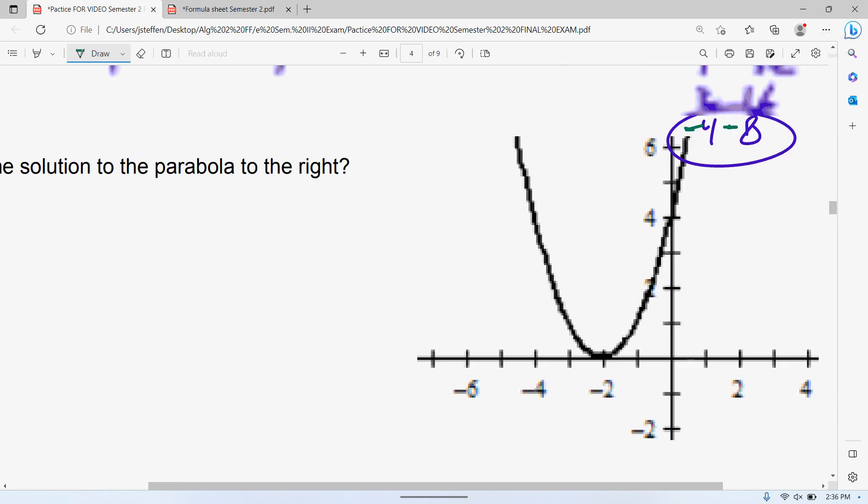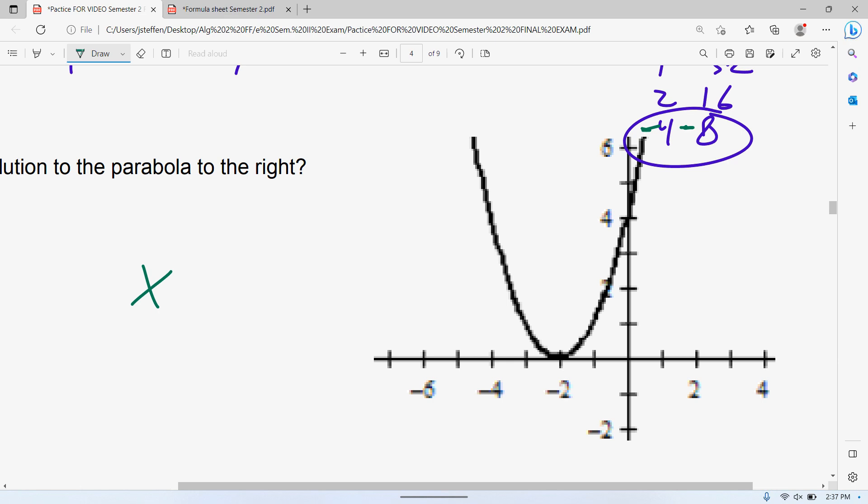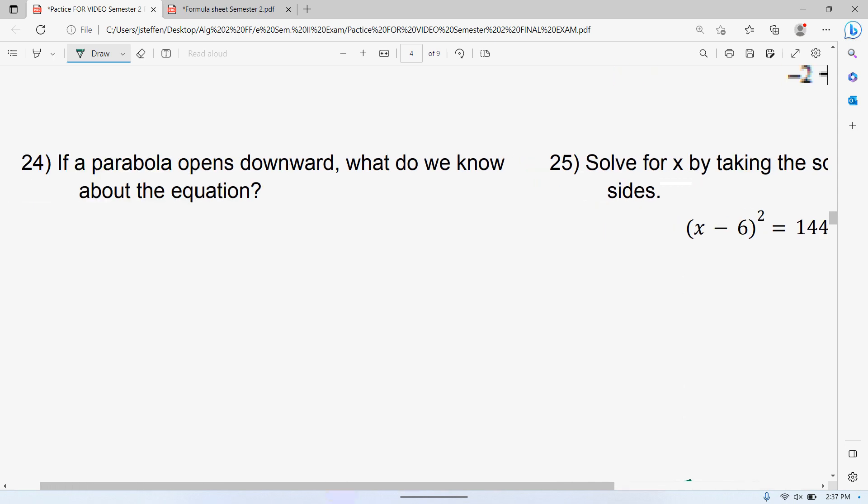Alright, what solution parabola on the right? That solution is x equals 2. A parabola can have two solutions, but if it just touches then it only has one solution. 24, if a parabola opens downward, what do we know about the equation? If your parabola opens down, that means it's negative. Anytime our parabola opens downward that means it starts with a negative, like negative 2x squared plus 3x plus 9. That first coefficient means it opens downward.